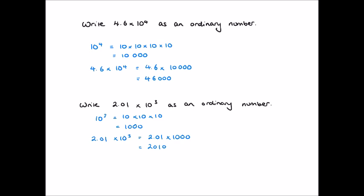You might be spotting a shortcut here. When we dealt with 4.6 times 10 to the power of 4, we moved all the digits to the left 4 spaces. Then when we dealt with 2.01 times 10 cubed, we moved all the digits to the left 3 spaces. So the power, or the index, gives us an indication of how many spaces we move our digits.